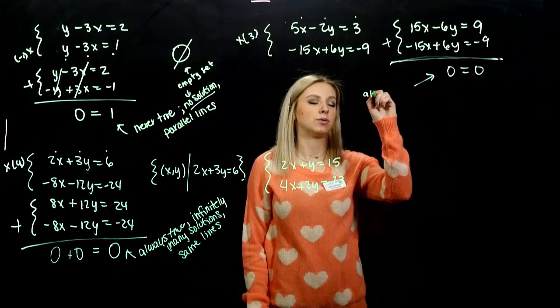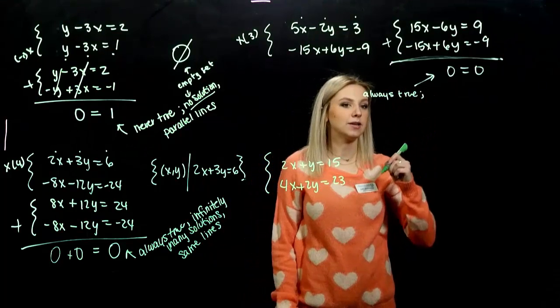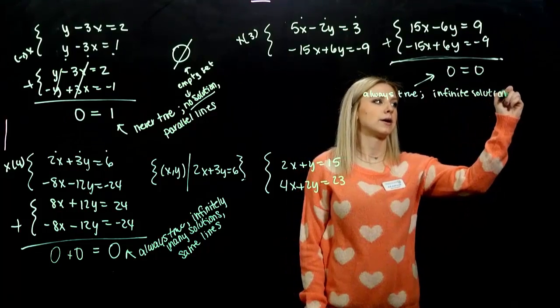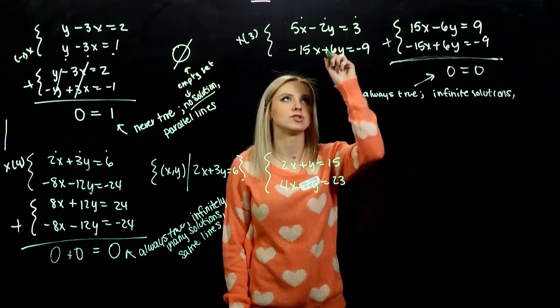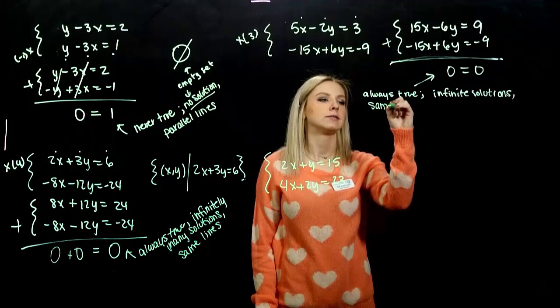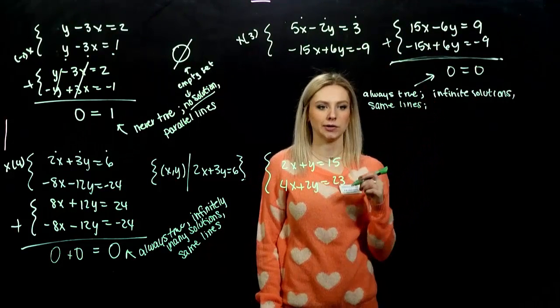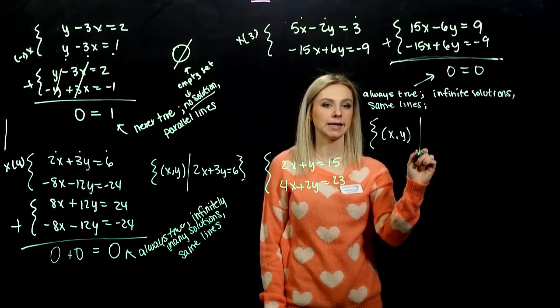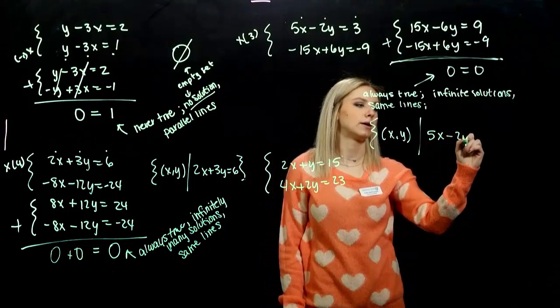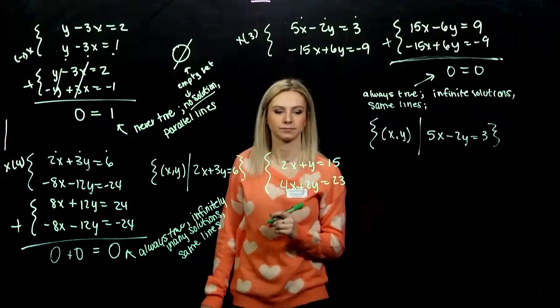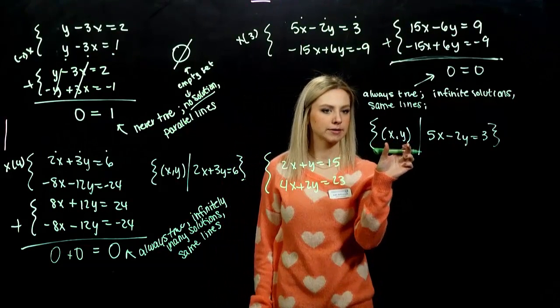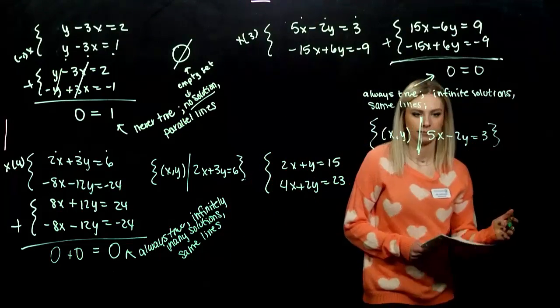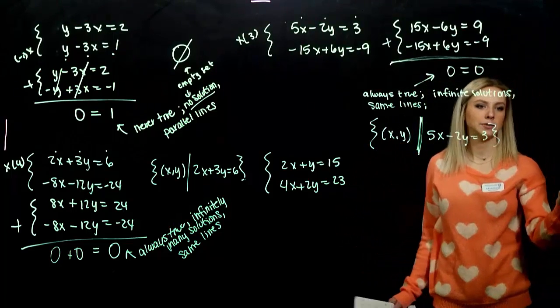So, what happens? It's always true. 0 is equal to 0. So, there's infinitely many solutions. Infinite solutions. Picture-wise, what are we looking at? The exact same line. One is just a multiple of the other. Same lines. So, the set notation, what does it look like? What will satisfy this system? Any point that lies on the line 5x - 2y = 3. That tells me the set containing a whole bunch of points such that this is true. They fall on that line. If you eliminated y, you got the same thing.